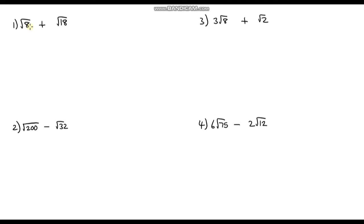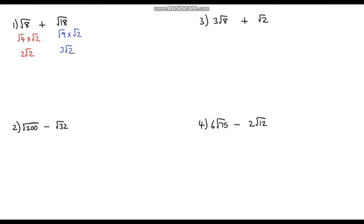It's over to you now — pause the video and see if you can answer these four questions. Question 1: root 8 plus root 18. First simplify the surds. Root 8 is root 4 times root 2, and the square root of 4 is 2, giving 2 root 2. Root 18 is root 9 times root 2, and the square root of 9 is 3, giving 3 root 2. So 2 root 2 plus 3 root 2 gives us 5 root 2.